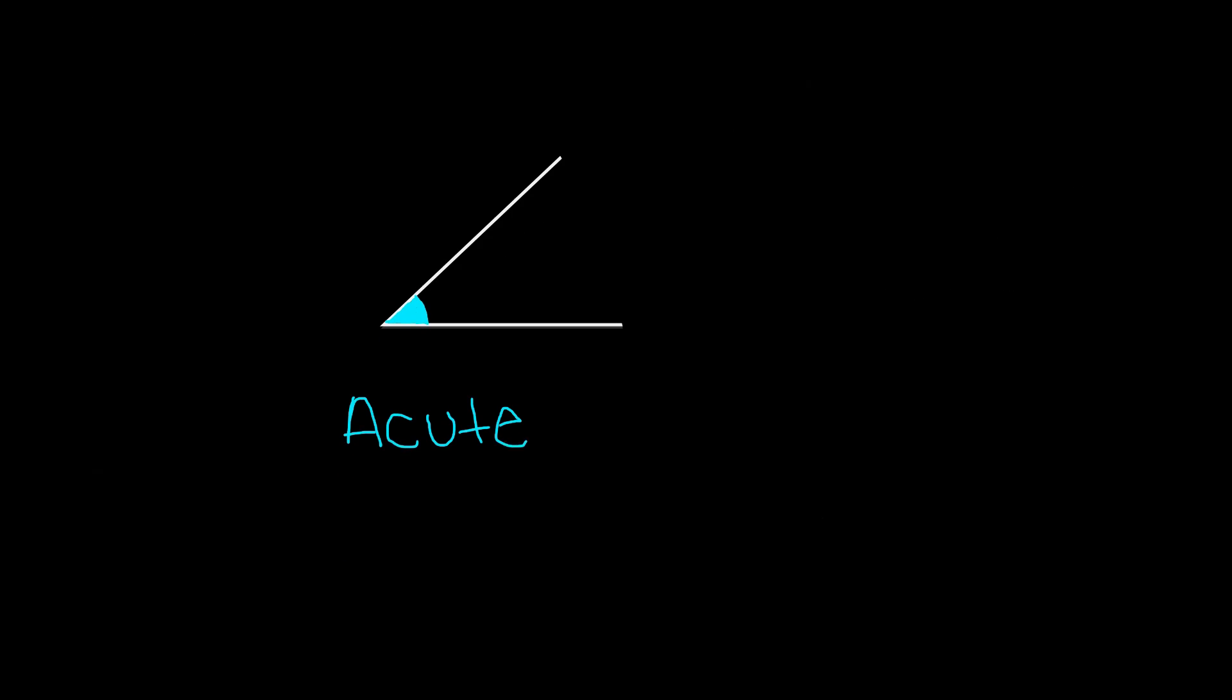Our first angle is the acute angle. The acute angle is an angle that measures exactly less than 90 degrees. So it cannot measure 90 degrees, it measures less than 90 degrees. The angle's measurement has to measure less than 90 degrees.